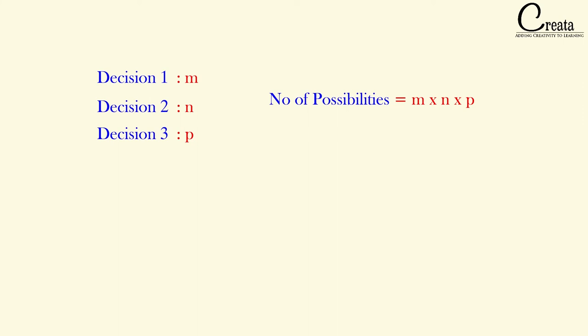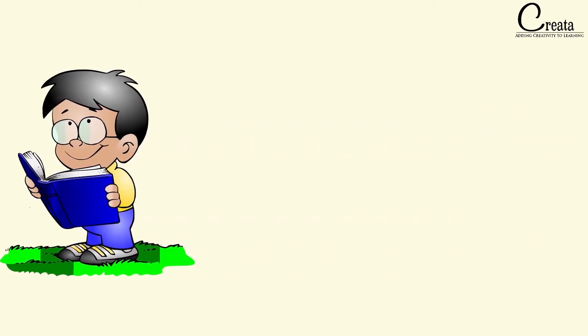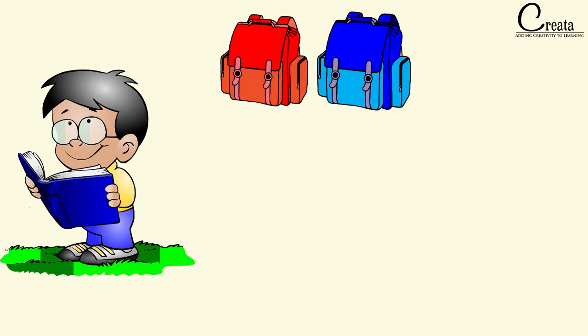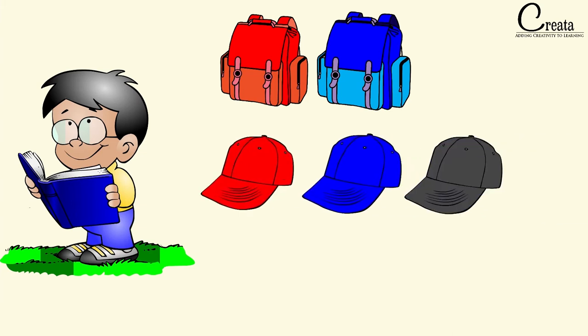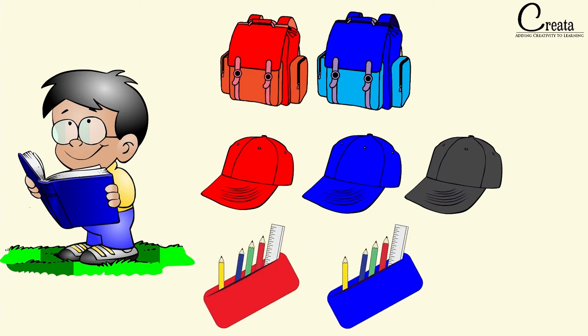Let's try this fundamental with 3 events using a small example. Suppose a school student has to go to school and choose among some items. Firstly, he is having 2 bags — red bag and blue bag — and must choose 1. Then he is having 3 caps and must choose 1 among them. And finally, he is having 2 pencil boxes — one red and one blue — and must take only 1 pencil box to school. We have to calculate the various number of ways the student can go to school with different sets of items.